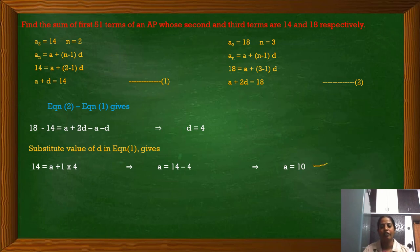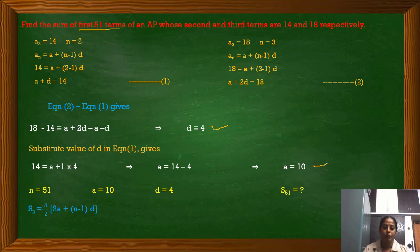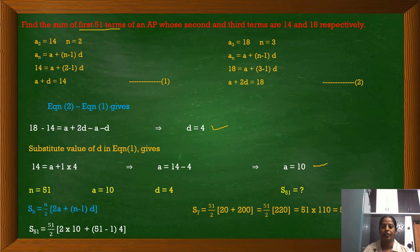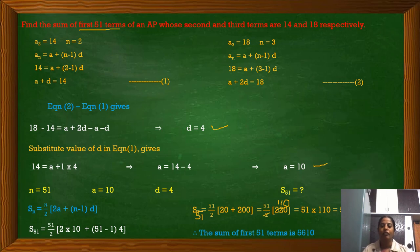Now we know a equals 10, d equals 4, and n equals 51. Substituting in S_n equals n by 2 into 2a plus n minus 1 into d, we get S_51 equals 51 by 2 into 20 plus 200, which equals 51 by 2 into 220. Half of 220 is 110, and 110 into 51 equals 5610.